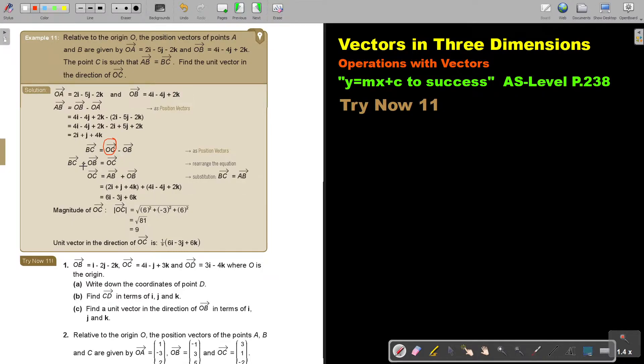This negative becomes positive, so basically I'm adding AB plus OB to find OC. And remember, if this is OC, then the coordinate points of C will be 6, negative 3, and 6.